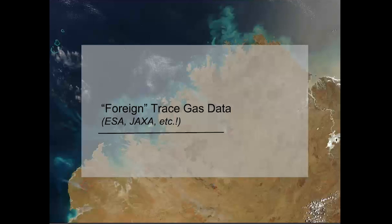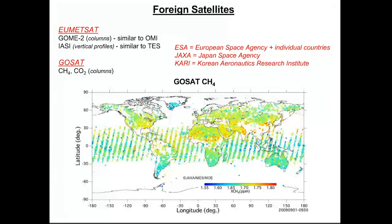There are also data from the European Space Agency and other countries like India and China that are starting to launch satellites as well. Some different satellites and how they compare: GOME-2 is very similar to OMI, and IASI is very similar to TESS. The image shown here is from the GOSAT instrument maintained by the Japan Space Agency — a relatively new dataset measuring methane that you may have interest in.